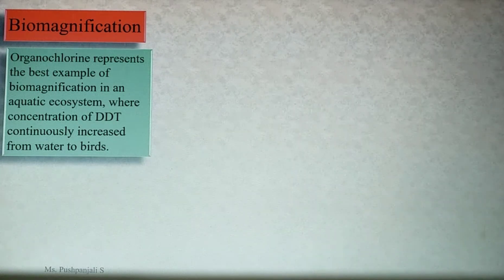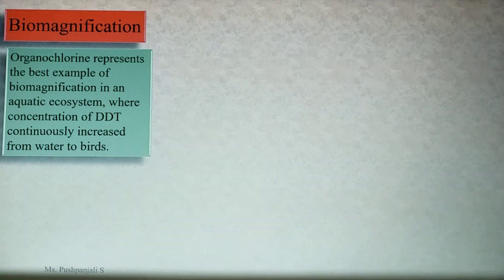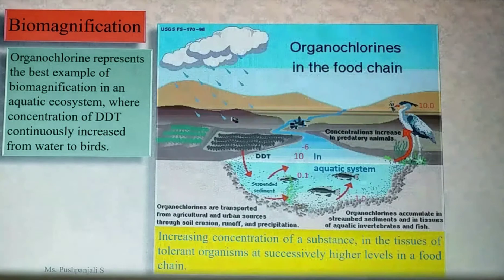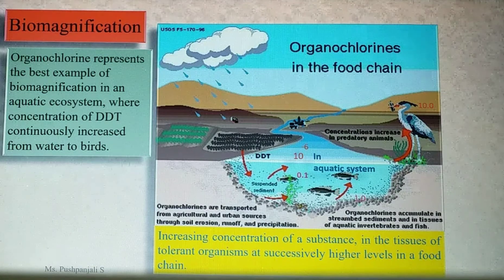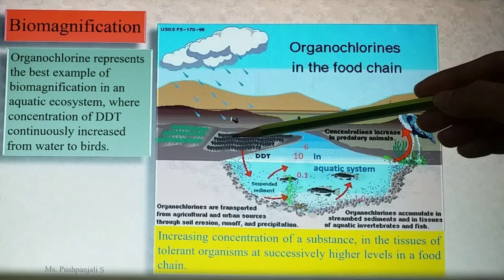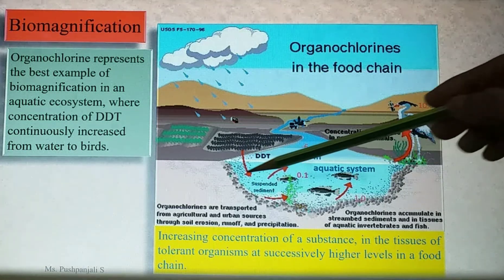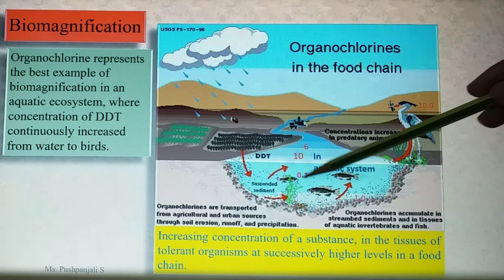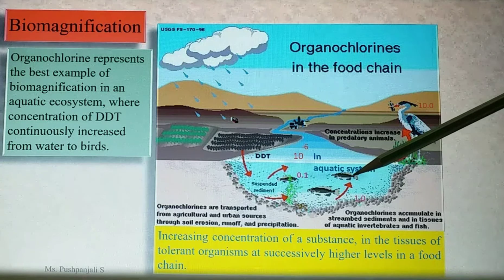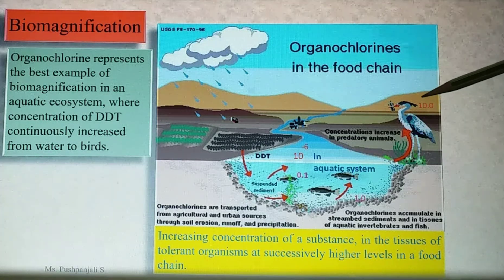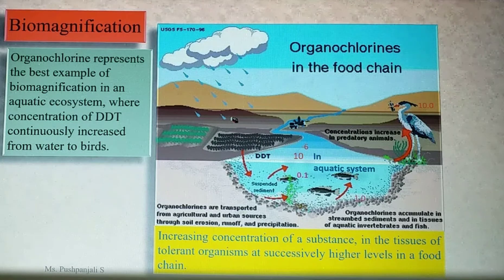Organochlorine represents the best example of biomagnification in an aquatic ecosystem, where the concentration of DDT continuously increased from water to birds. Organochlorines are transported from agriculture and urban sources through soil erosion, runoff, and precipitation. They accumulate in streambed sediments and in tissues of invertebrates and aquatic fishes. The concentration increases in predatory animals, so increasing concentration of a substance in the tissues of tolerant organisms at successively higher levels in a food chain is termed biomagnification.